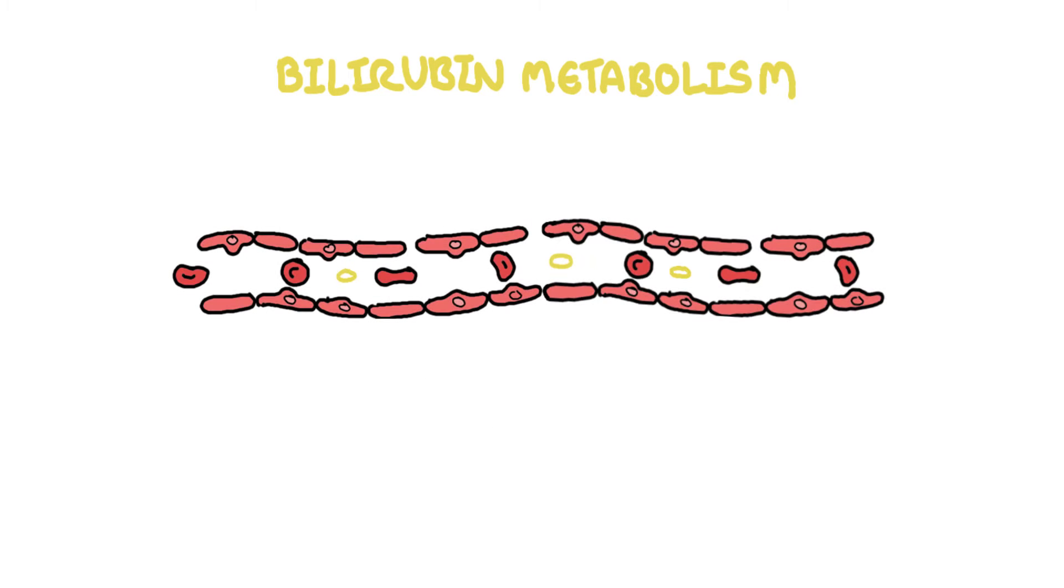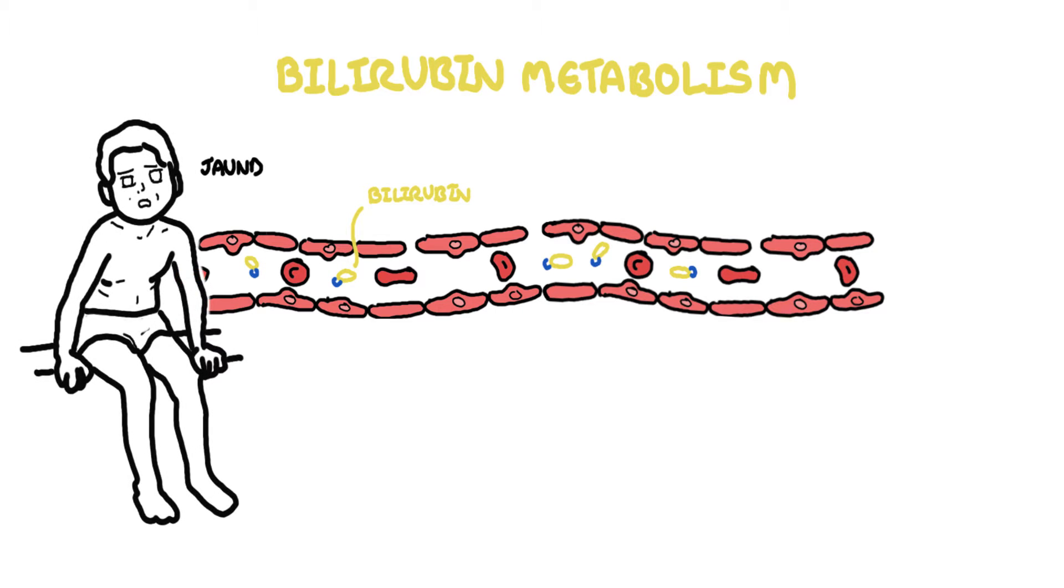In this video we're going to talk about bilirubin metabolism. Bilirubin metabolism is important because hyperbilirubinemia is a condition where you have high amounts of bilirubin that can lead to jaundice, which is yellowing of the skin and of the eyes.